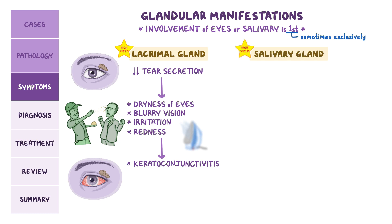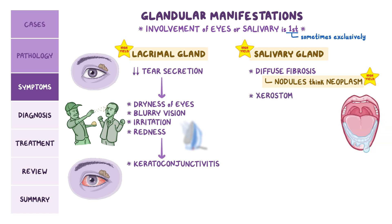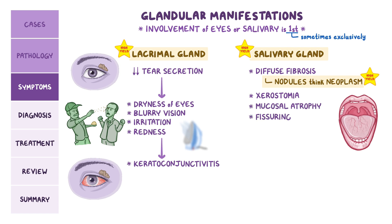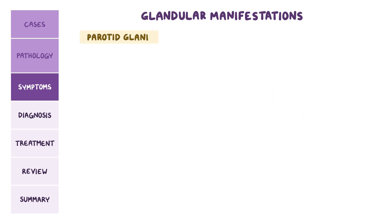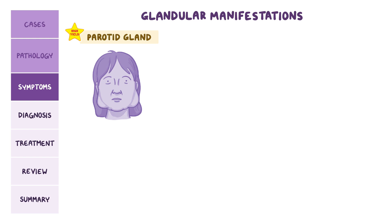Salivary gland involvement usually leads to diffuse fibrosis and painless enlargement of the gland. Remember that if you see nodules, think neoplasm instead. The diffuse damage to the glands leads to xerostomia, or dry mouth, due to decreased saliva secretion. The lack of saliva causes mucosal atrophy and fissuring of the tongue, decreased sensation of taste, problem swallowing, and tooth decay. If it involves the parotid glands, fibrosis can lead to bilateral parotid enlargement, which can compress on the nearby nerves, causing pain.